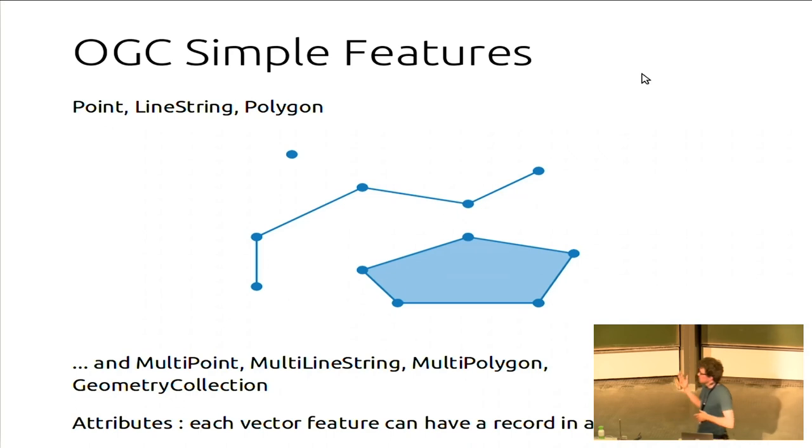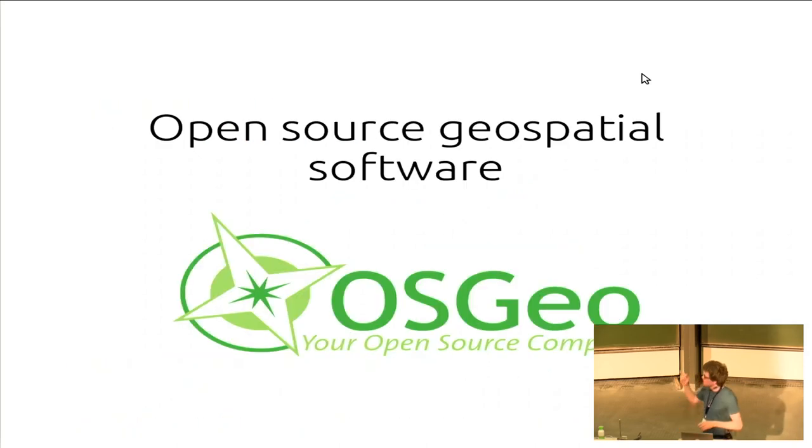And often, those data will also be attached to attributes. Each feature, each vector feature, has certain attributes that describe that feature or holds properties of that feature. And you may already guess, but here, if you have such an attribute table, that's where Pandas and GeoPandas will come into the picture. But before going to the Python packages to work with geospatial data, I quickly want to say something about a bigger ecosystem, because many of the base Python geospatial packages are actually just built upon a wider ecosystem. And many of those libraries that I will show now are supported by the Open Source Geospatial Foundation.